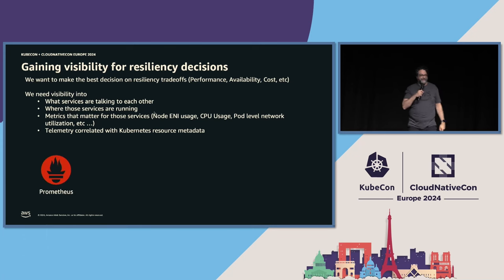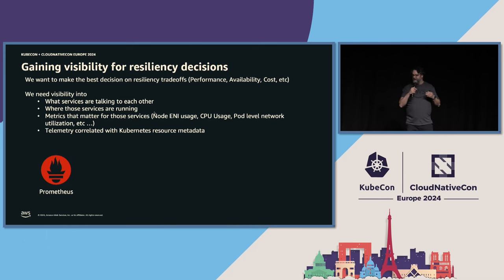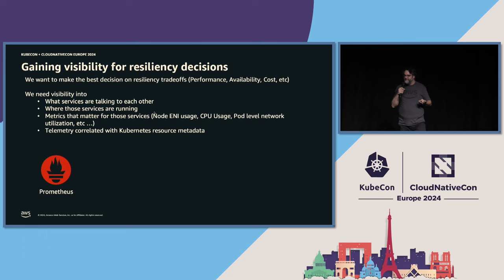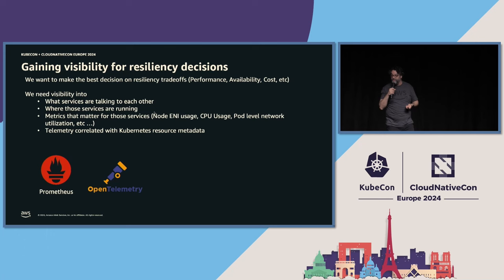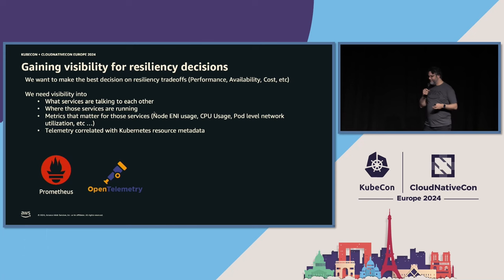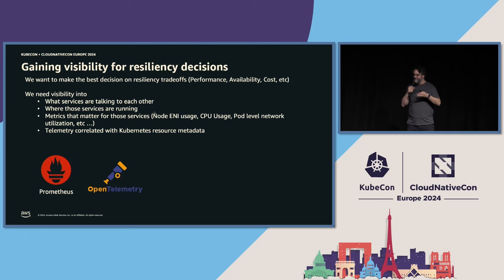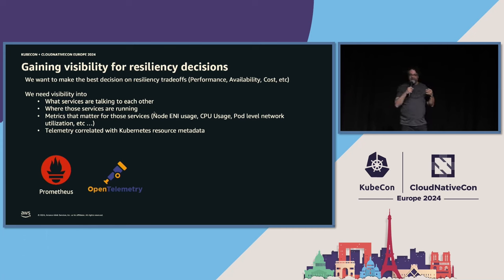What do I go to first? Prometheus — I can get metrics for pods, containers, and nodes, but it doesn't tell me where traffic is going from one AZ to another, and it doesn't give me information about performance between services. Then I start using OpenTelemetry — tracing gives me a dependency map to understand what service is talking to what, but again it doesn't have all the information at the AZ level.